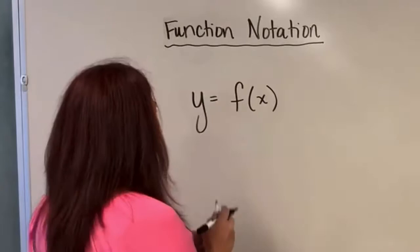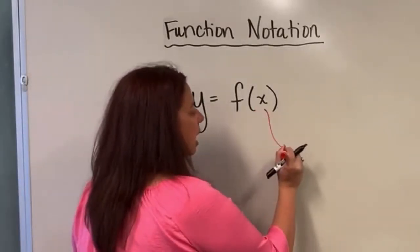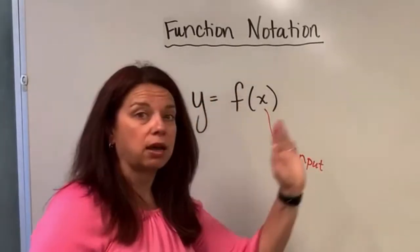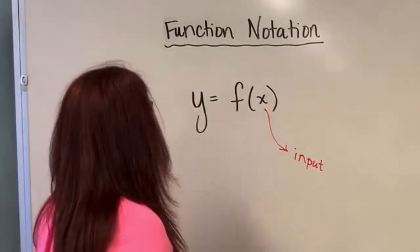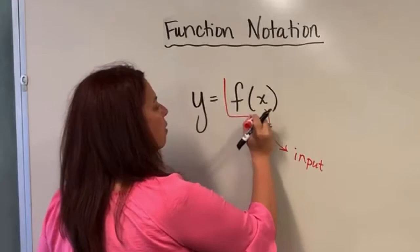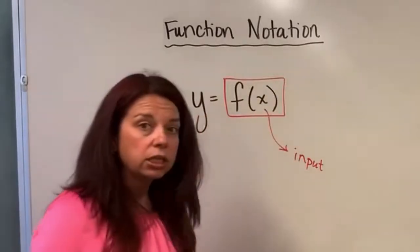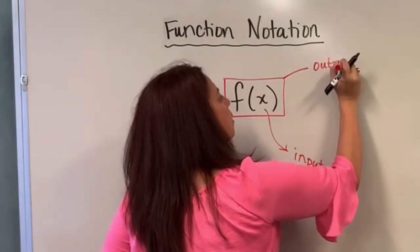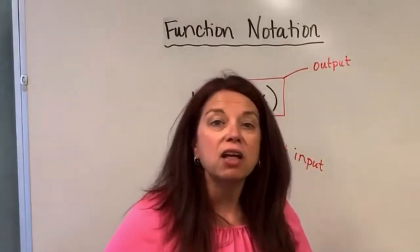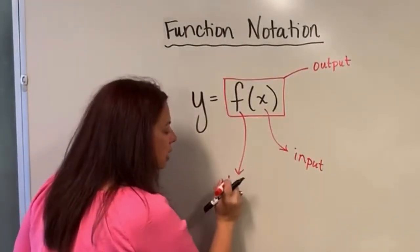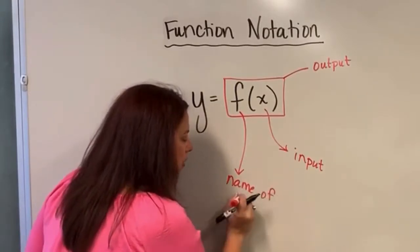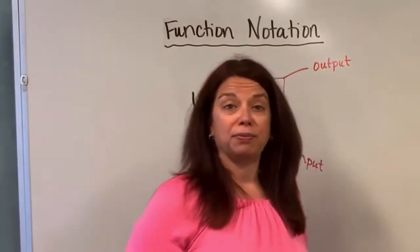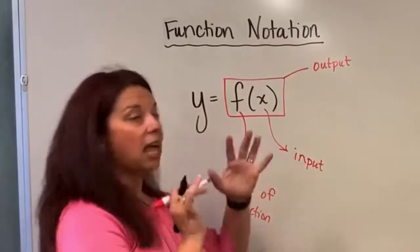One thing to mention as a reminder is the x itself in this notation is considered the input. That's important to keep track of. The next thing to know is this whole f of x function itself represents the output. You might be wondering what is the f by itself? It actually represents the name of the function. If somebody asked what's the name of this function, you wouldn't tell them f of x, you would just say f. f is the name of this function, x is the input, f of x is the output.